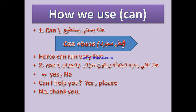Horse can run very fast. Look — 'can' plus the verb 'run', which is a base form. 'Can' has two uses: in a regular sentence it is followed by a base verb, or 'can' comes at the beginning of a question. For example: Can I help you? Yes please. / No thank you.